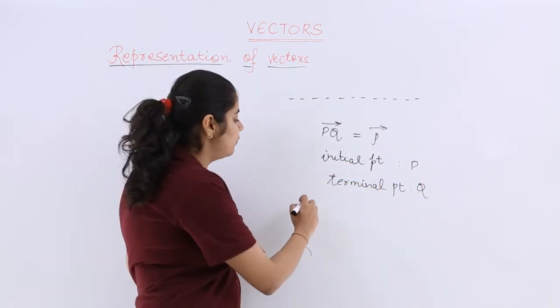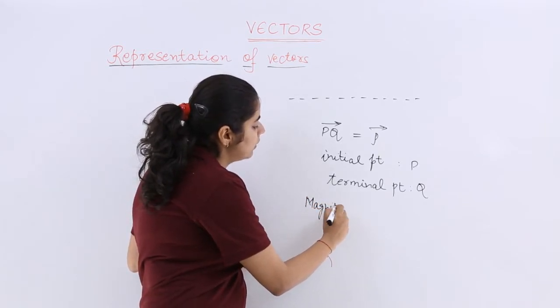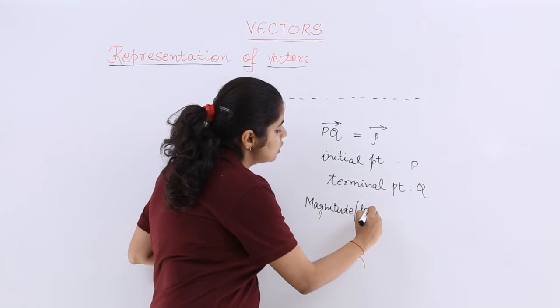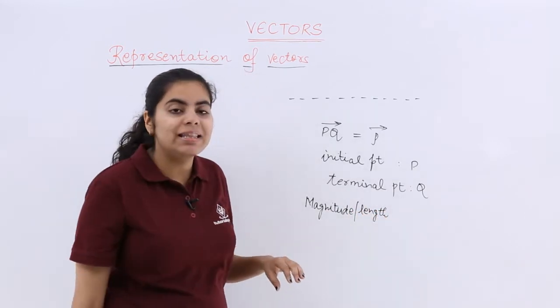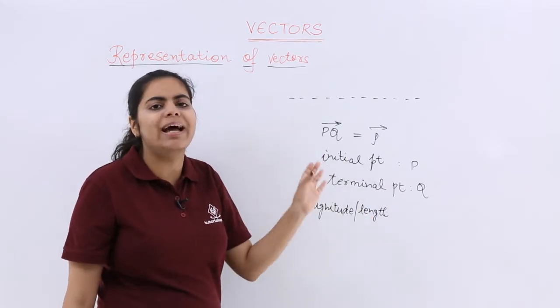See three important terms that I will talk about. One is the magnitude of the vector. Magnitude of the vector is also called the length of the vector, and that is nothing but the distance from P to Q or between P and Q.